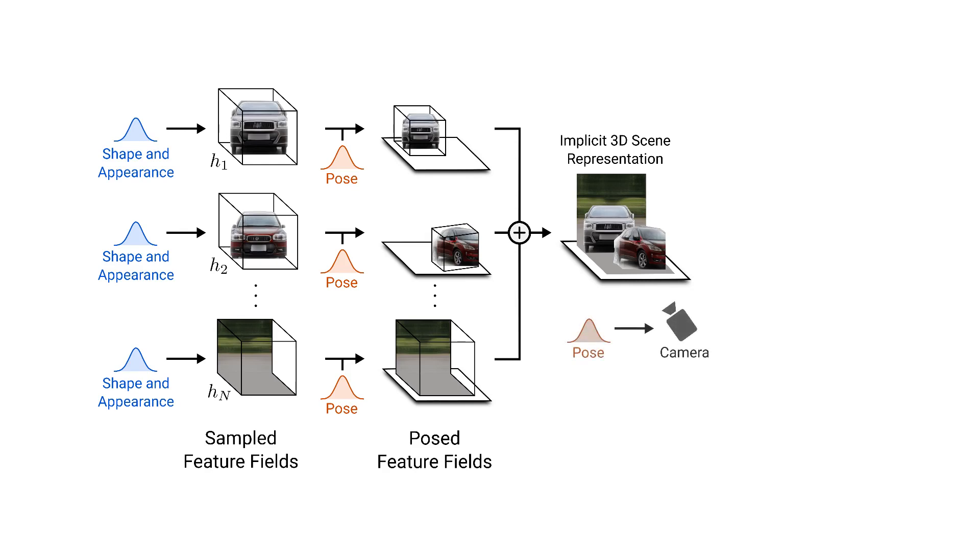In order to render the scene, we first need to sample the camera pose from a predefined distribution. We then perform volume rendering for the sampled camera and obtain a feature image.